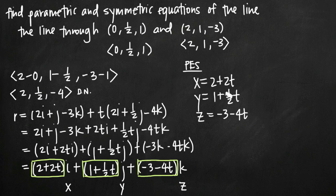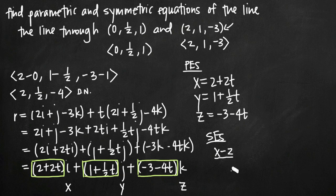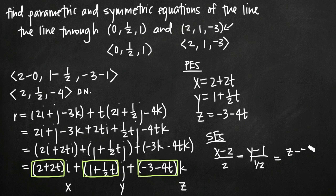Now we just need to find our symmetric equations of the line, which is easy — all we need is one point on the line and our direction numbers. Using the point (2, 1, -3), we say: x minus the x component divided by the associated direction number gives (x - 2)/2. Set that equal to (y - 1) divided by 1/2. Set that equal to (z - (-3)) divided by -4. With symmetric equations, you always set them equal to each other, with the variable minus its coordinate value in the numerator.